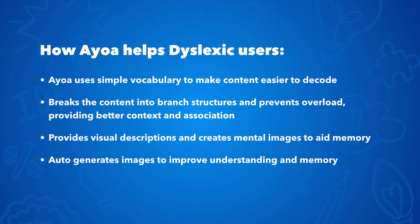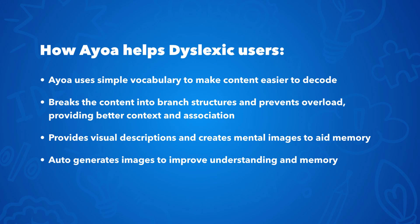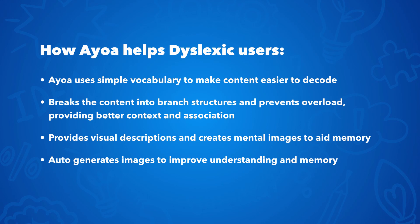Last but not least, let's see how AOS helps dyslexic users. AOS uses simple vocabulary to make content easier to decode. It breaks content into branch structures to prevent overload, providing better context and association. It provides visual descriptions and creates mental images to aid memory, and it auto-generates images to improve understanding and memory.